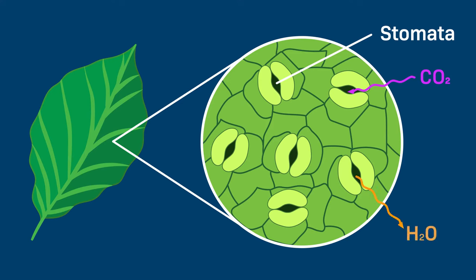Stomata also let water out of the leaf into the air in a process called transpiration. And we're about to get up close and personal with them.